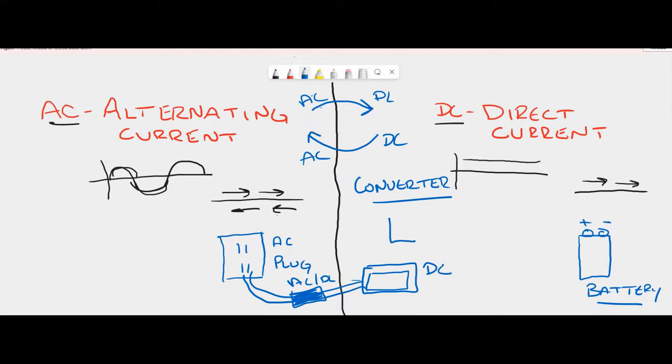We have the same thing when we have a cell phone. A cell phone has one of those little blocks. And then that block goes to your phone and then charges your phone. This is that converter. That block is a converter. It's taking the AC here and converting it to DC for your phone.